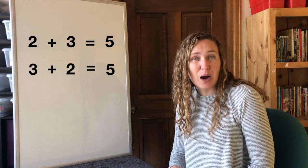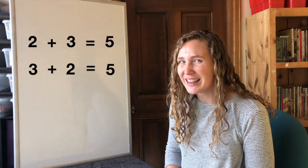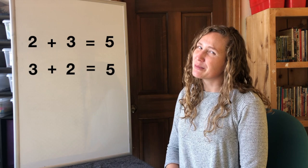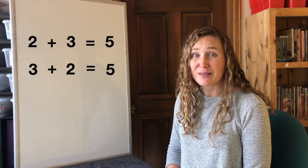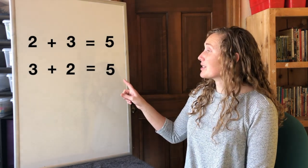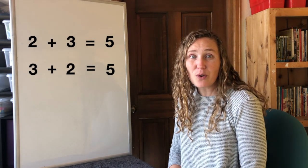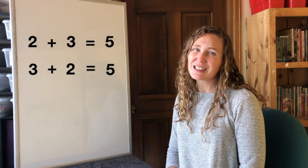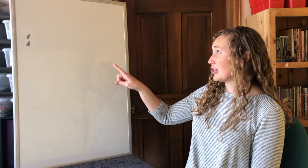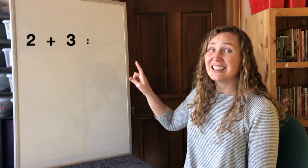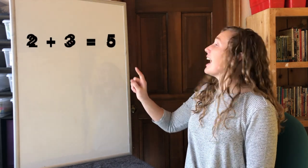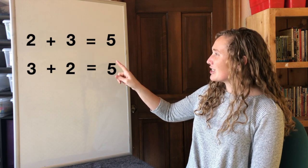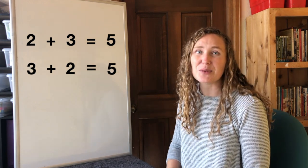The answer is still the same because of the commutative property. The commutative property. Do you know what that is? The commutative property of addition means that numbers can be added in any order, and your answer will still be the same. Two plus three equals five, and three plus two also equals five.